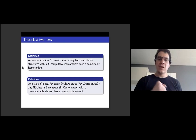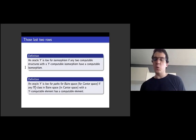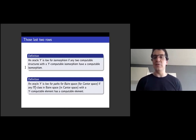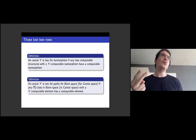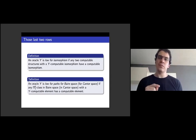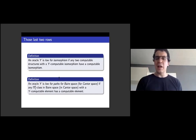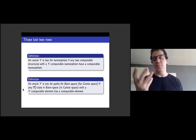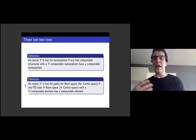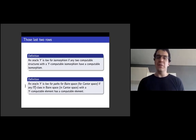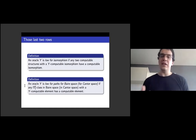Low for isomorphism: if any two computable structures that the oracle can find an isomorphism for have a computable isomorphism — that's unpacking the definition of lowness. Low for paths: paths is actually two different problems, depending on whether we talk about trees in Baire space or Cantor space, giving a priori two different lowness notions. Instead of computable trees, I'll talk about Pi-0-1 classes. You're low for paths in Baire or Cantor space if the only Pi-0-1 classes you can find an element of have a computable element — you're terrible at finding elements of Pi-0-1 classes.